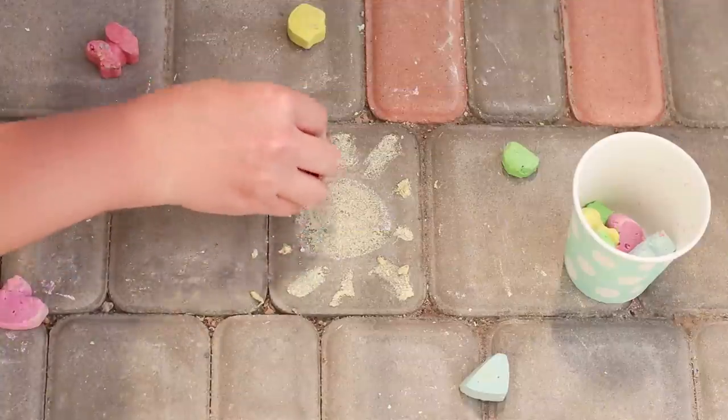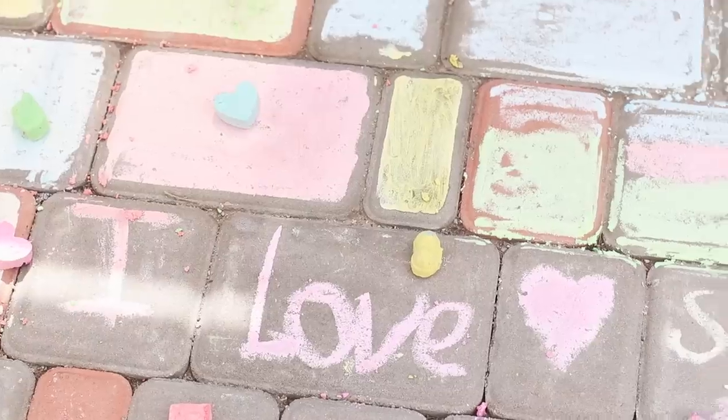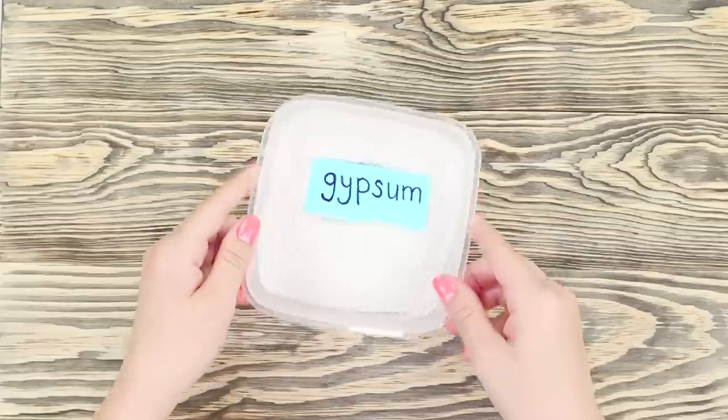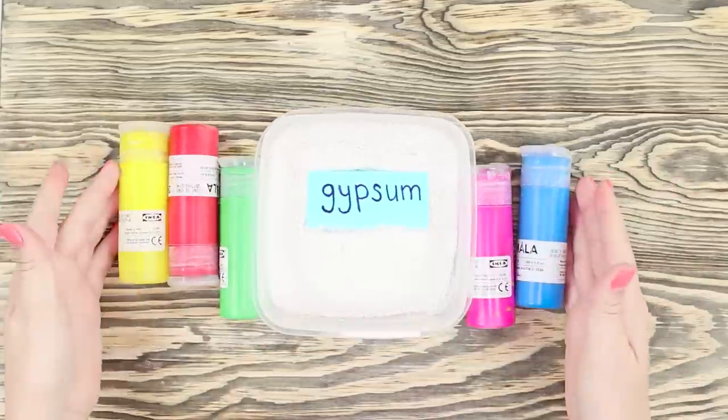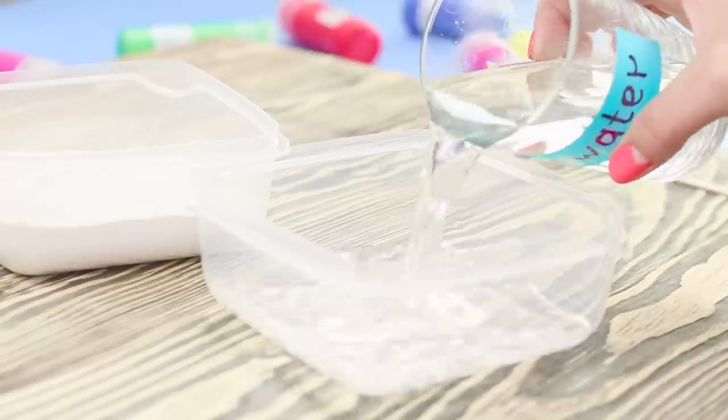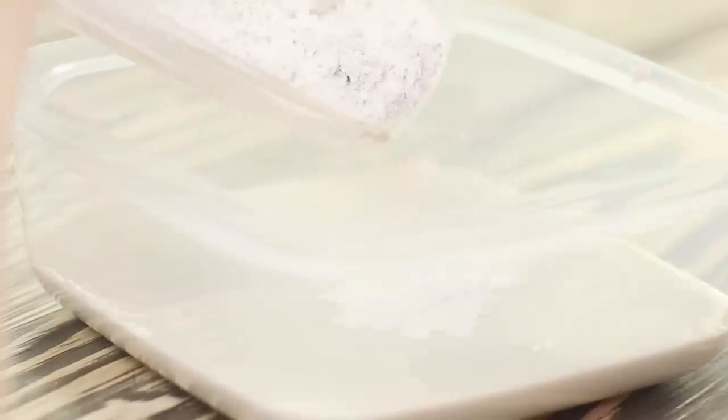And in this life hack, you will learn how to make colorful crayons for drawing. You will need water, plaster of Paris, and acrylic paints. Prepare the plaster of Paris solution, mixing water with plaster.